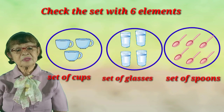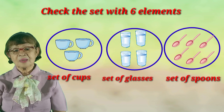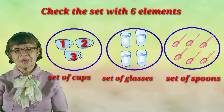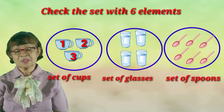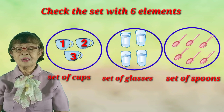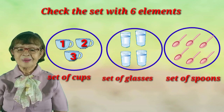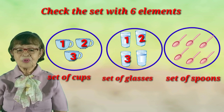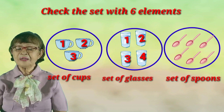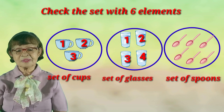First, the set of cups. Let's count the cups: 1, 2, 3 cups. We have 3 cups in the set of cups. Let's go to the set of glasses. Let's count the glasses: 1, 2, 3, 4. We have 4 elements in the set of glasses.